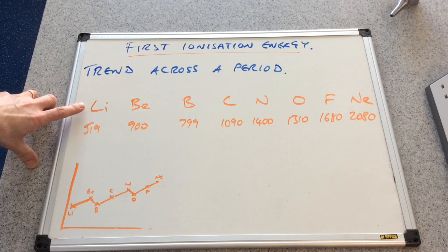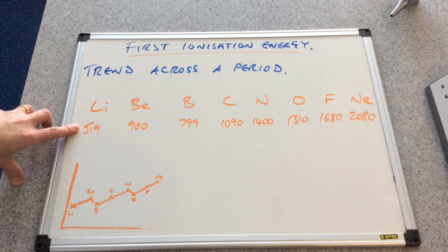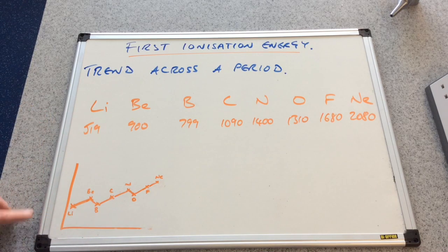I've looked up the values for the first ionisation energies for these elements and popped them in here. I've also drawn a very simple graph just so you can get a visualisation of what's happening.